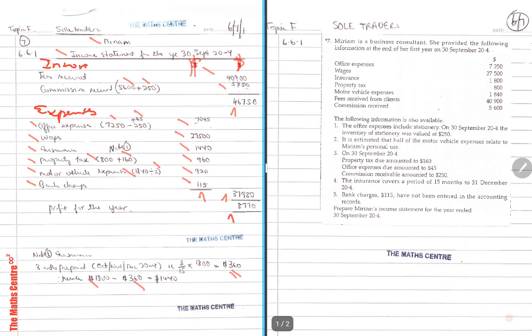And that is your income statement of Miriam for the year ended 30th September 2064. You can pause this video anytime to look at the solution again.